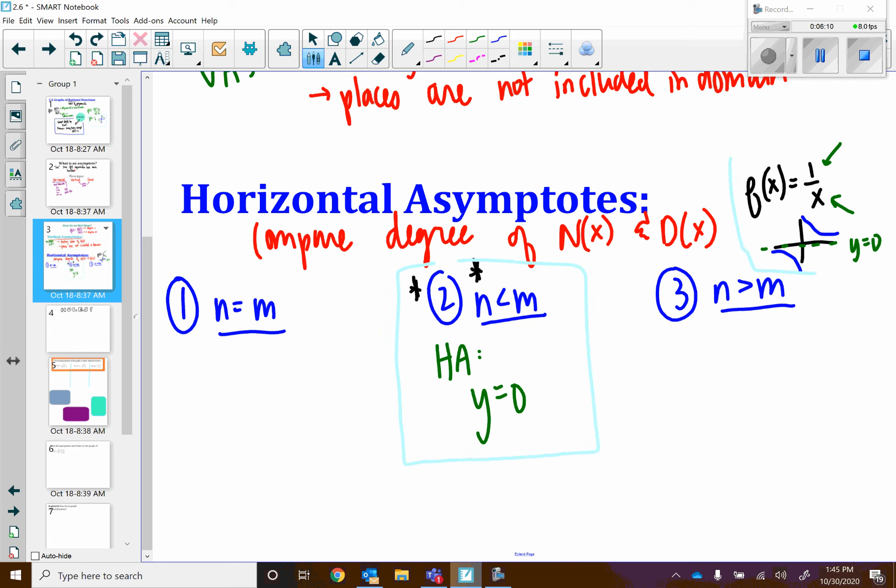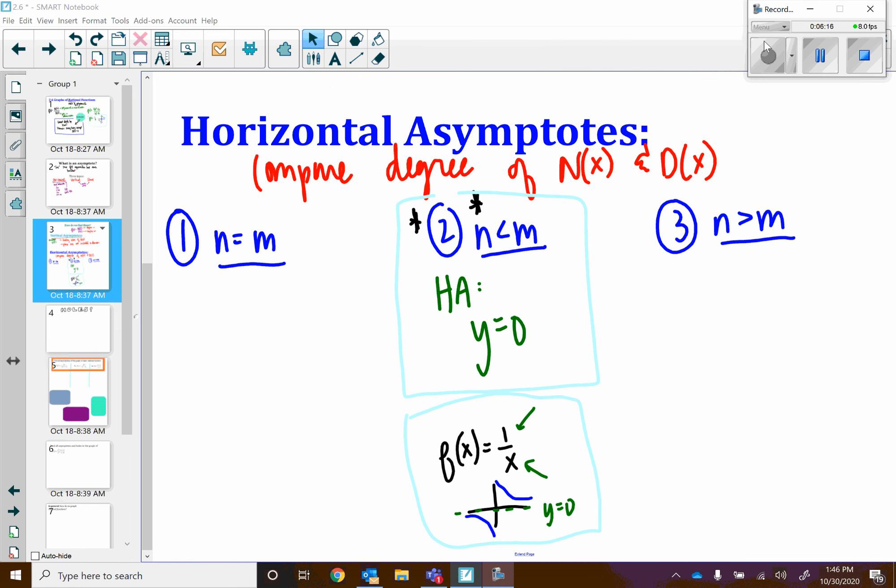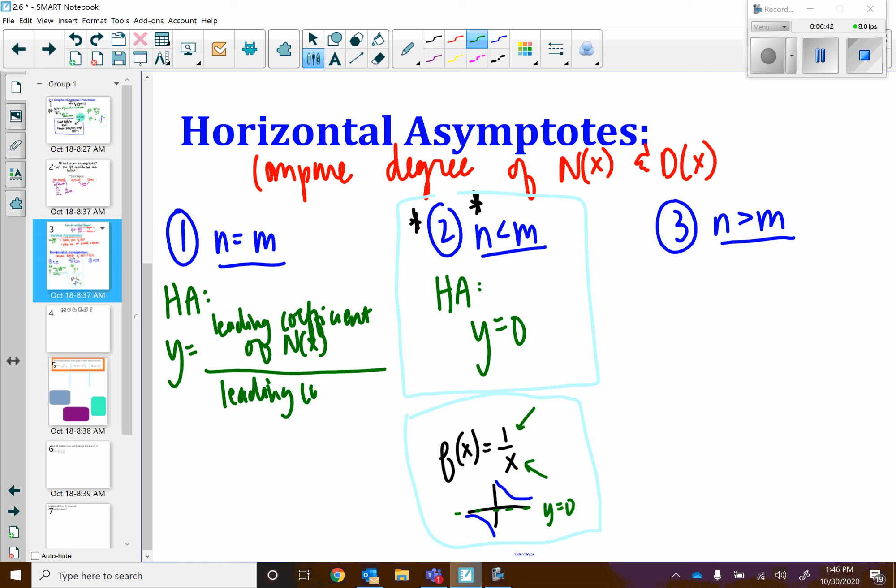Again, how would we remember this? I would think of your function from our 12 basic functions. All right, what about if the degree of the numerator is the same as the degree of our denominator? In this case, our horizontal asymptote will be the line y equals the leading coefficient of your numerator divided by the leading coefficient of your denominator. And don't you worry, we will do examples of all three of these in class.